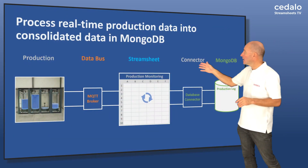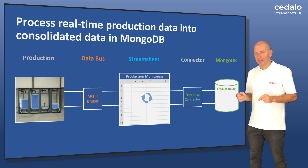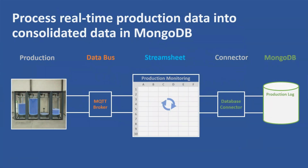On this slide you can see how our use case is set up. On the left we see the production plant which sends sensor data via the MQTT protocol. The StreamSheet processes the data and stores the consolidated data from each batch as a record in a MongoDB database.